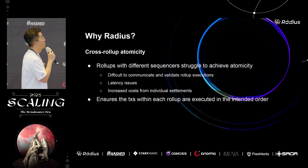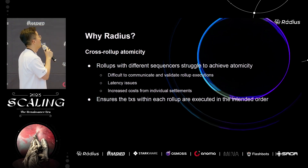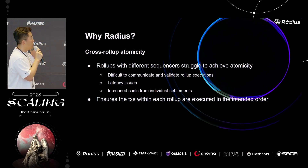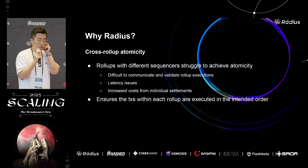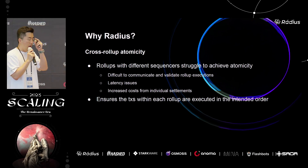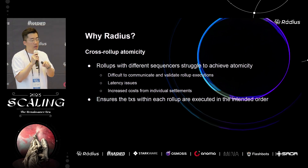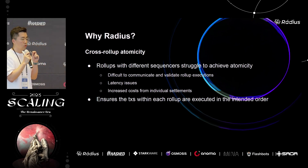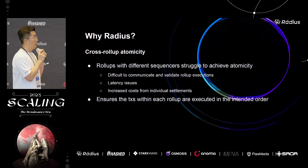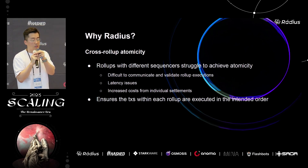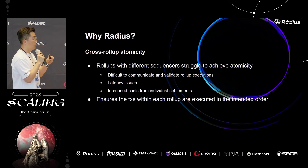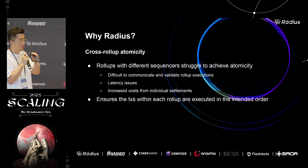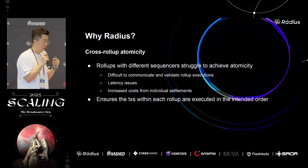Another area is cross-rollup atomicity — not claiming we've solved interoperability, but the shared sequencing layer has a great opportunity to support composability. Because we support multiple rollups building a block together, we can make sure that atomicity can happen during block building. This is an ongoing discussion, so if you're interested, please let us know.